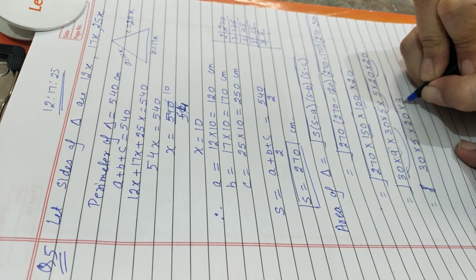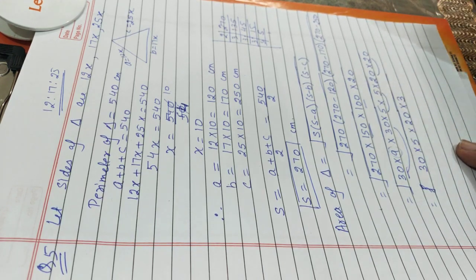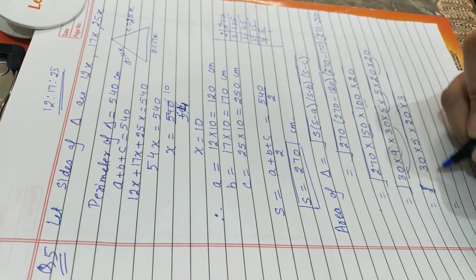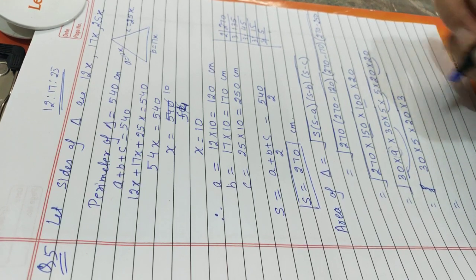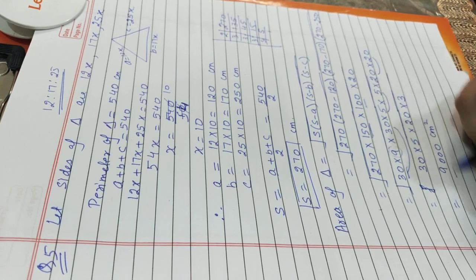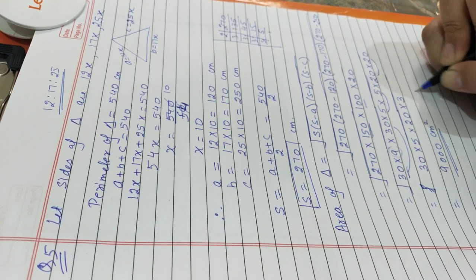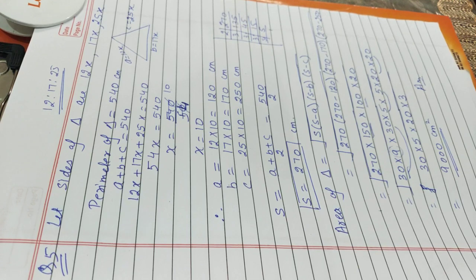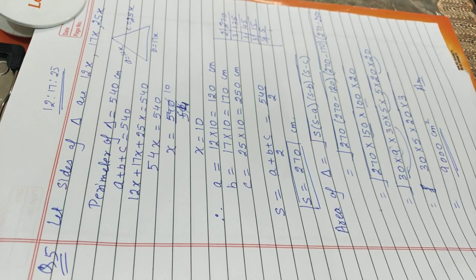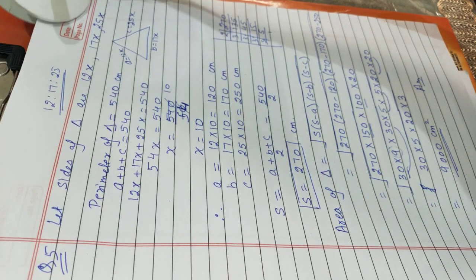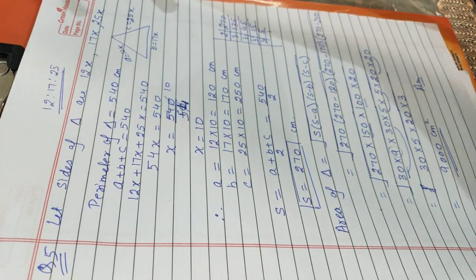After extracting all perfect square pairs from under the root, nothing remains inside the root. Multiplying the terms outside gives 9000 centimeter square. So the area of this triangle is 9000 centimeter square. This question is also complete.